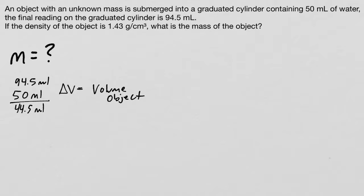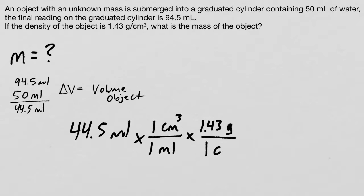If we know the volume, we can solve this problem. Let's start with 44.5 milliliters. We know that one milliliter is equal to a centimeter cubed, and our density states that there's 1.43 grams in every one centimeter cubed. Our milliliters cancel, our centimeters cubed cancel.